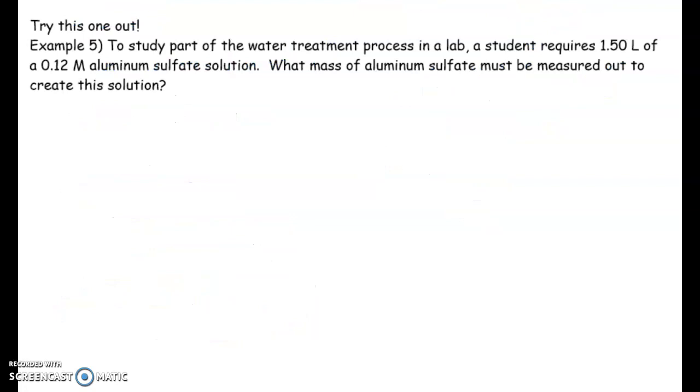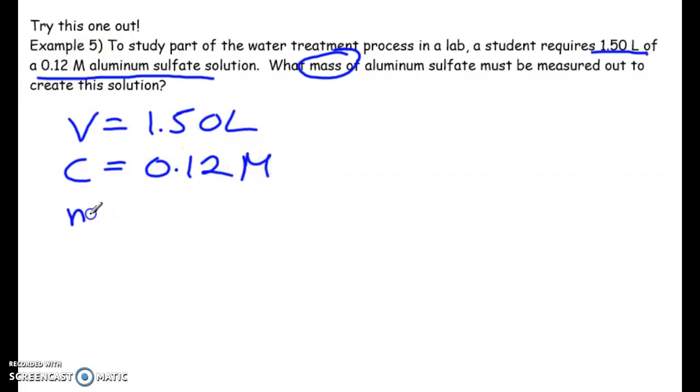So try out this next one. So to study part of the water treatment process in a lab, a student requires 1.50 liters of a 0.12 mole per liter of aluminum sulfate solution. What mass of aluminum sulfate must be measured out to create this solution? All right, give this a try. You should be able to do this at this point in time. So let's talk about this here. So we have a volume of 1.50 liters and a concentration of 0.12 moles per liter. So we want to eventually solve for the mass of aluminum sulfate.